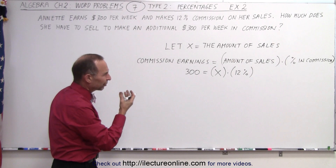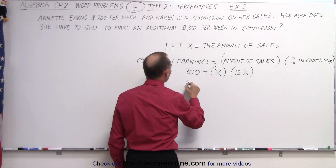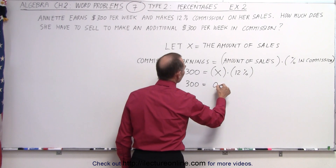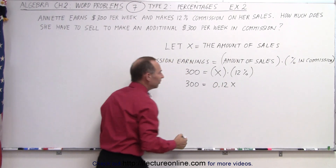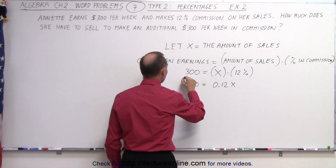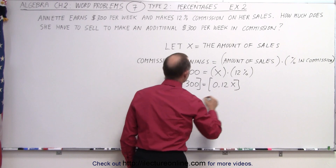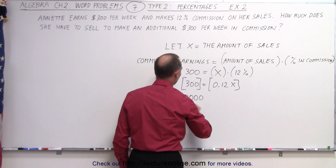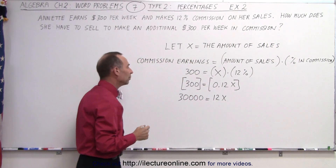You want to get rid of the 12%, so first we write it as a decimal. So write 300 equals 0.12x, because 0.12 is the same as 12%. Now we want to get rid of the decimal, so we multiply both sides by 100. We have 3 with now 4 zeros, which means 30,000 equals 12x.